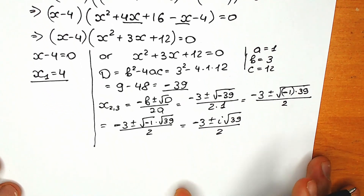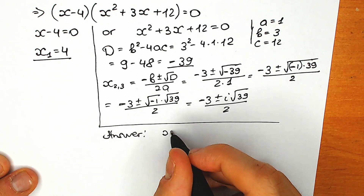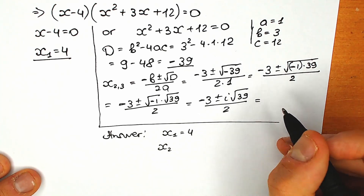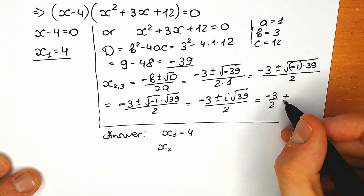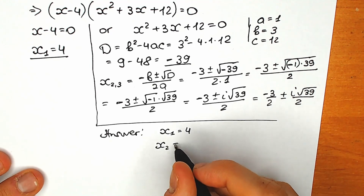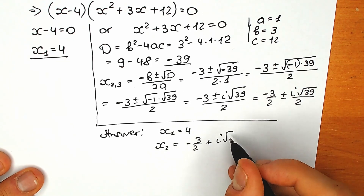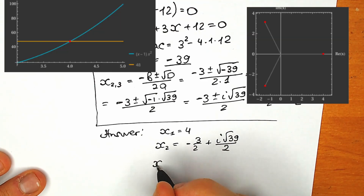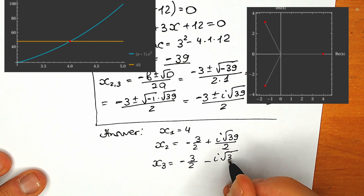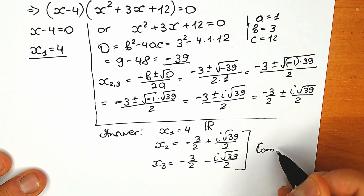Right now let's write the final answer. x₁ equals 4. For x₂ and x₃ we can split into real and imaginary parts: x₂ equals minus 3/2 plus i·(square root of 39)/2, and x₃ equals minus 3/2 minus i·(square root of 39)/2. This one is our real number root, and these two are our complex roots.